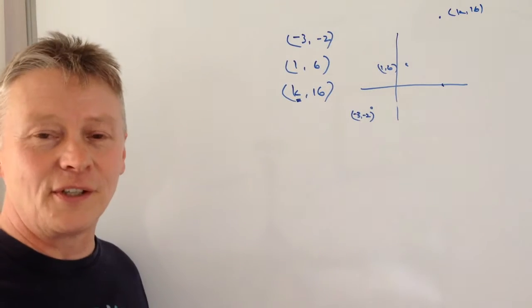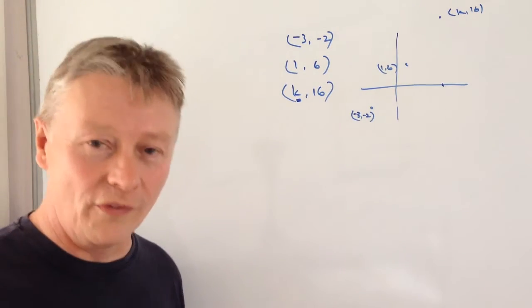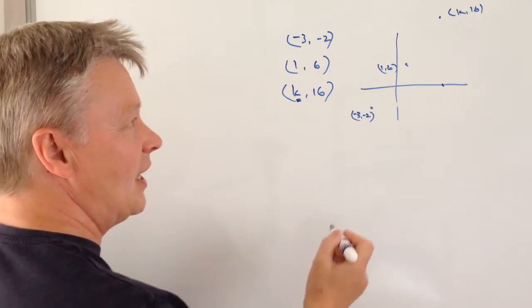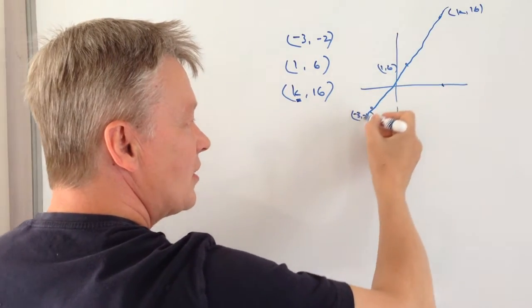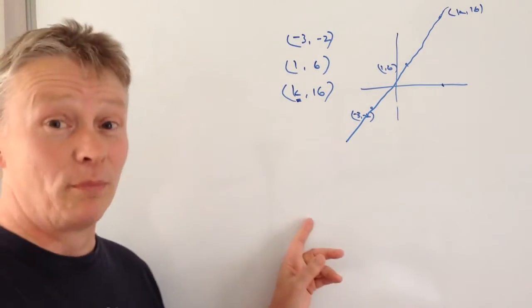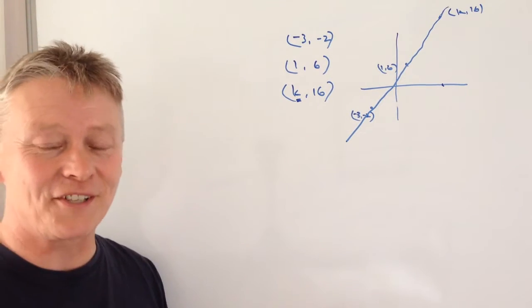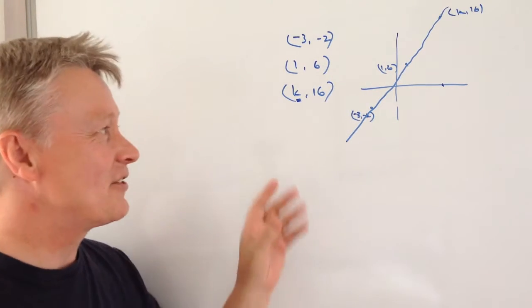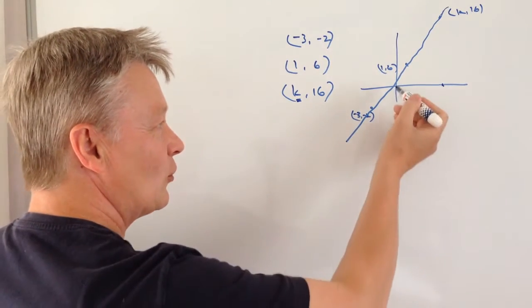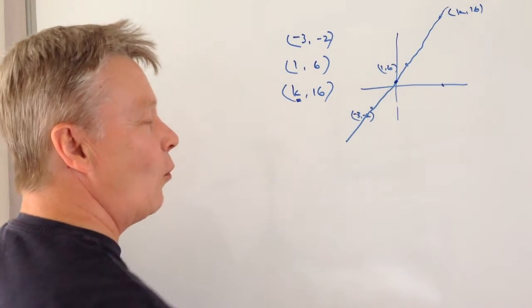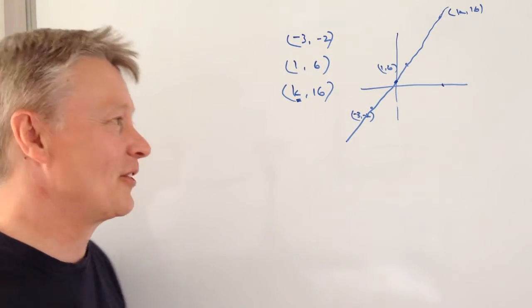I would always advocate doing a sketch first because I think it gives you an idea of what the graph looks like. In this case, it's a straight line graph in the positive direction, so the gradient is going to be positive. I also know it's going to cross the Y axis at some point, though this might be a negative value.